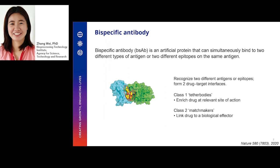As we know, bispecific antibody, BsAb in short, is an artificial man-made protein that can simultaneously bind to two different types of antigens or bind to two different epitopes. By doing so, BsAb can form two different drug-target interfaces, either enriching drug at a relevant site of action or linking drug to a specific biological effector.